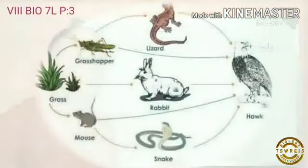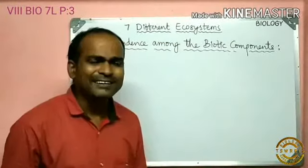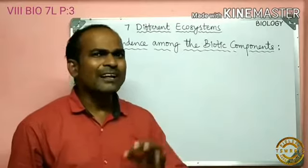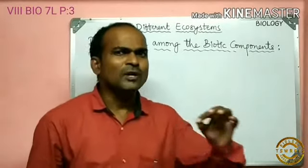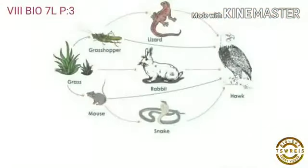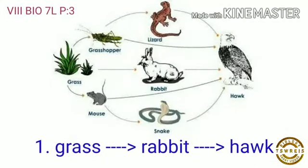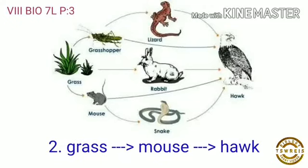Let's observe the slide here. What do the arrow marks indicate? The arrow marks are indicating who eats who. They are also indicating that energy is moving from one organism to another organism. Let's trace the path from grass to hawk: grass → rabbit → hawk is one path, and grass → mouse → hawk is a second path.